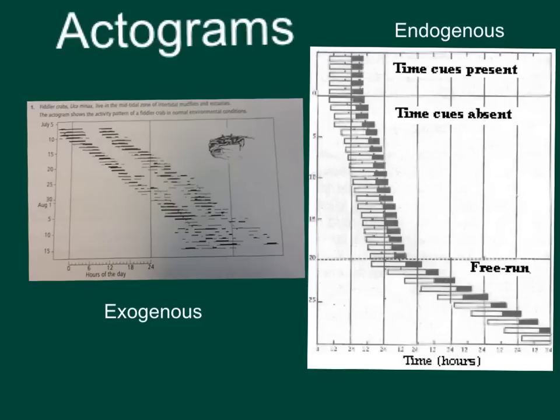The actogram usually shows when the zeitgeber, the external cue, is present, removed, and in exogenous actograms, enters a free-running period. Free-running is where the zeitgeber has been removed for so long, the organism becomes completely dependent on its internal clock.